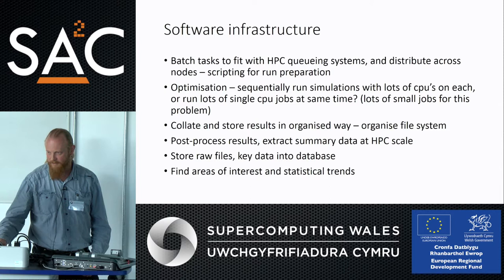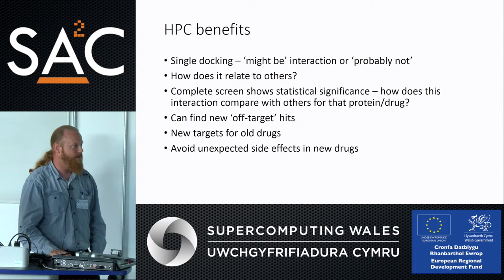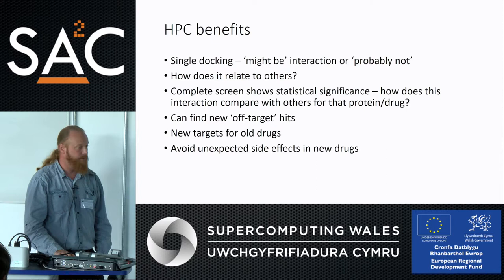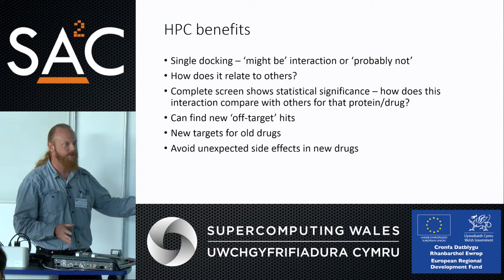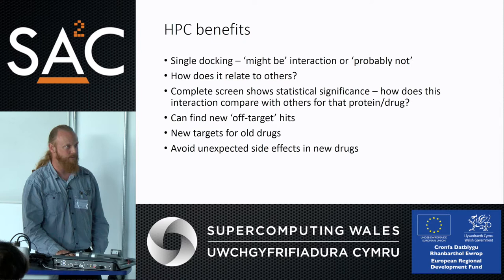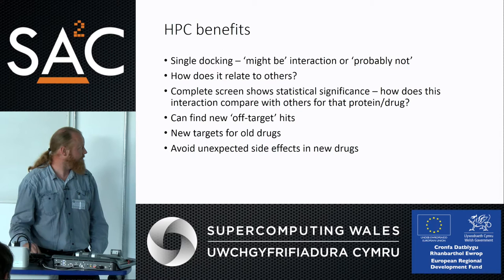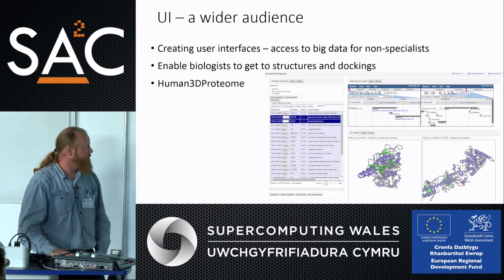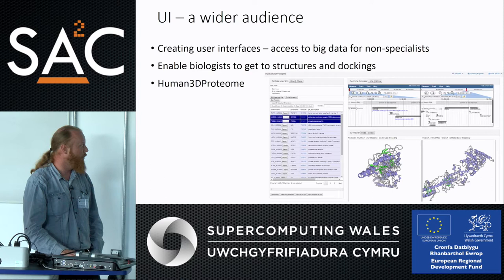Doing it at HPC scale gives you benefits that rather than just looking at single cases, you can look at them on a statistical basis — how does a particular interaction compare with all others for that protein, how does a drug interact with all proteins in the human body, what might the side effects be, or what might be potential new uses for the same drug. We've also done some work on writing user interfaces for post-processing the results to make them more available to biologists who aren't HPC specialists.